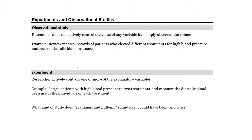There are two types of studies we mostly focus on: an experiment and an observational study. In an observational study, the researcher does not actively control the value of any variable — they just collect information and try to make sense of it. An example would be reviewing medical records of patients who elected different treatments for high blood pressure and recording the diastolic blood pressure of all those patients.